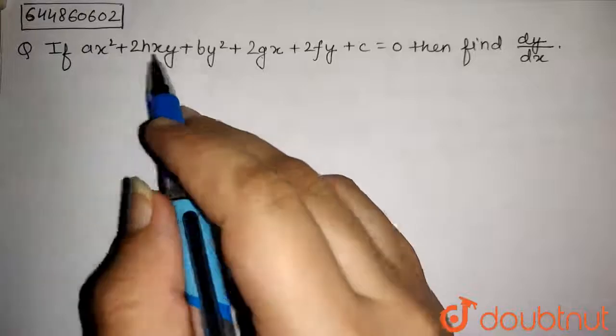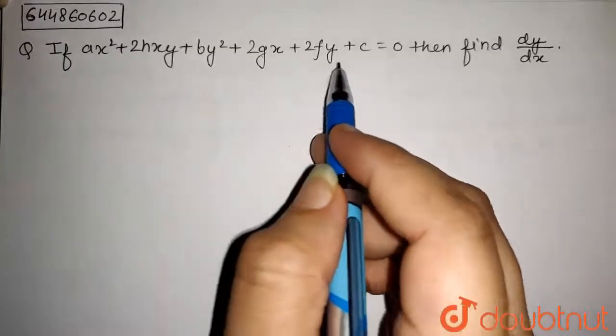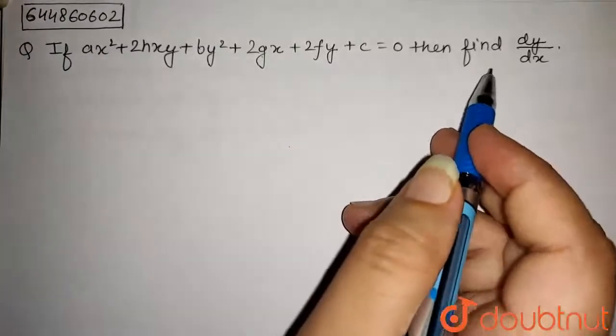The question is, if ax² plus 2hxy plus by² plus 2gx plus 2fy plus c equals to 0, then find dy by dx.